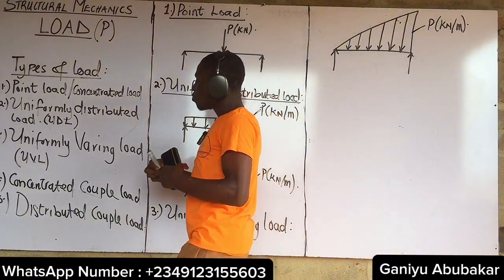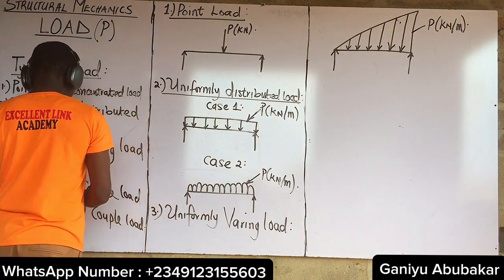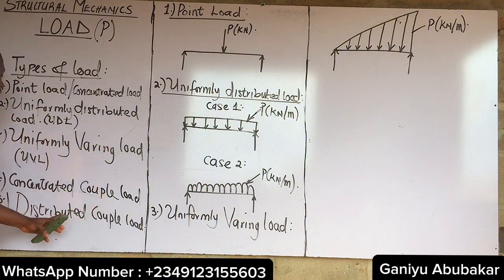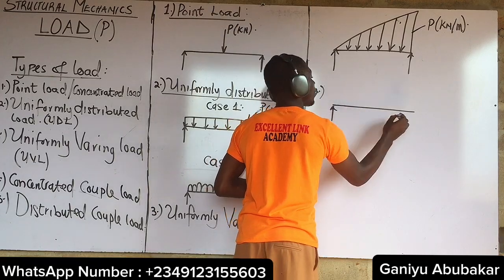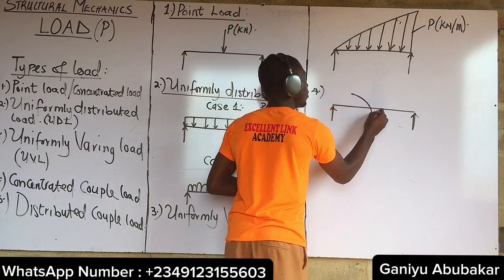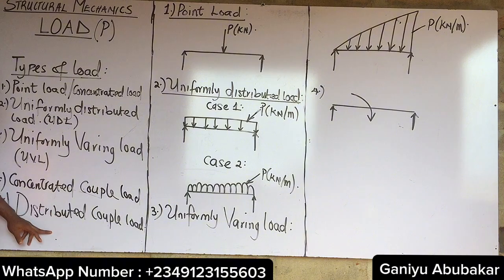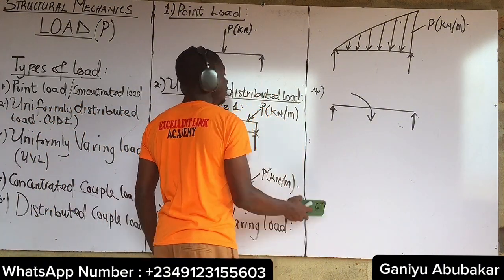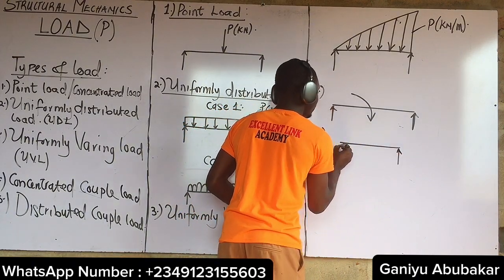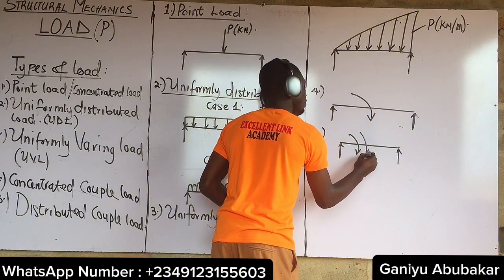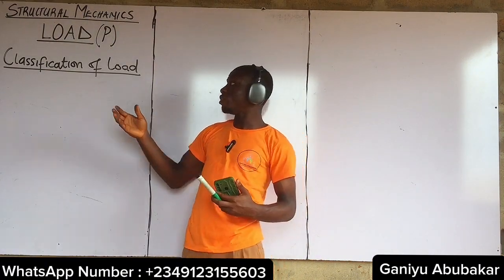Now let me show the diagrams for the two additional types. Type four is the concentrated couple load, and type five is the distributed couple load. I'm showing these two diagrams just to illustrate that they exist, as they are not among the three major types.